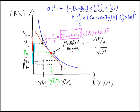Again, we have to correct the price with one-half times convexity, times the price of the bond, times the change in the level of interest rates squared.